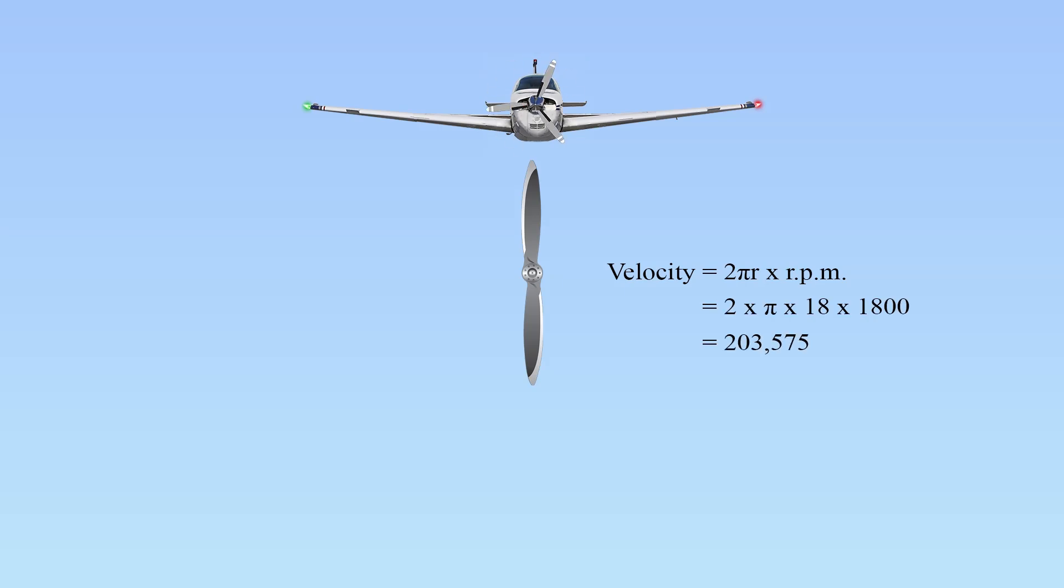For example, to determine blade velocity at 0.18 inches from the hub that is rotating at 1,800 RPM. At 0.18 inches from the hub, the blade travels approximately 203,575 inches per minute.